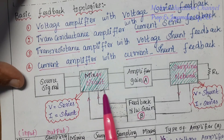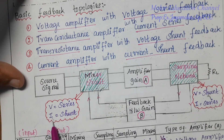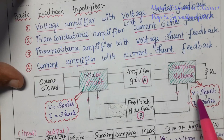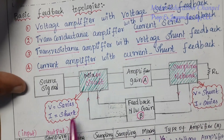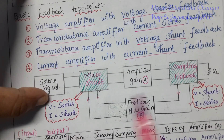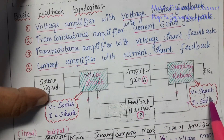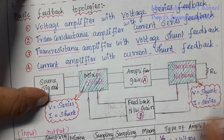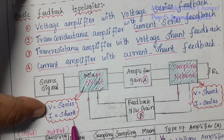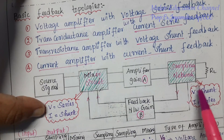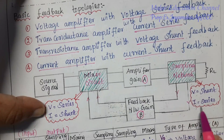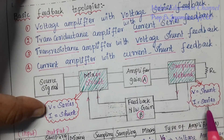In the input section, mixer circuits can be voltage or current. The sampling network at the output section also has voltage or current. The key difference: mixer circuit voltage is series, but sampling network voltage is shunt (parallel connection). Mixer circuit current is shunt, and sampling network current is series.